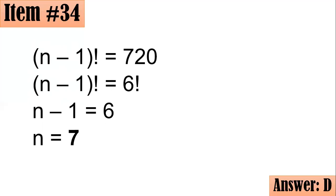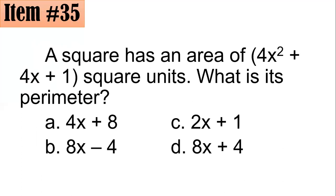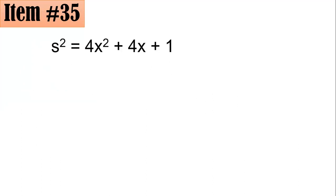Item 35: A square has an area of 4x squared plus 4x plus 1 square units. What is its perimeter — a, b, c, or d? The formula for the area of a square is s squared, and that equals 4x squared plus 4x plus 1.